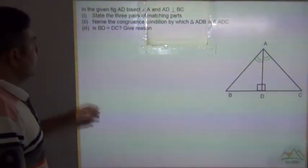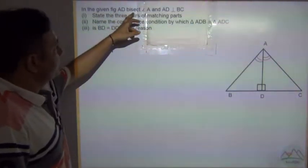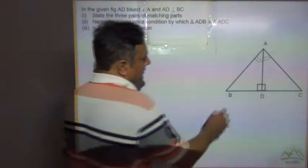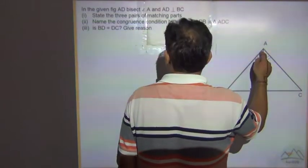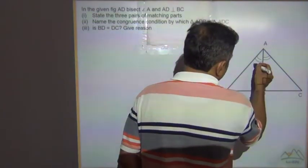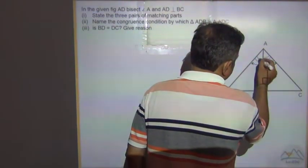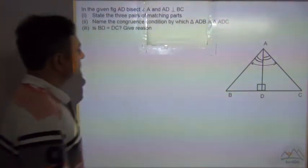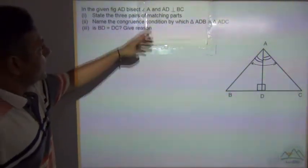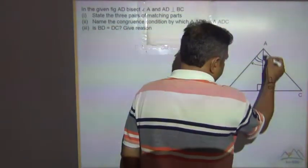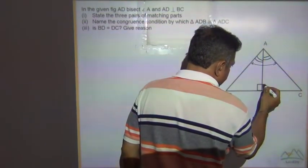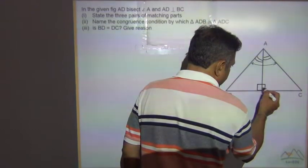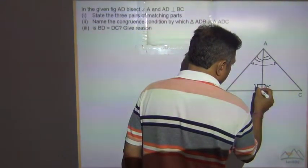Our next question: In the given figure, AD bisects angle A, so AD is the line segment which bisects angle A. This means this angle is equal to this angle. AD is perpendicular to BC, so the angles are 90 degrees on both sides because this is a straight line.